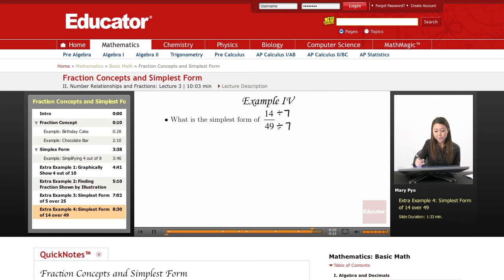So 14 divided by 7 is 2, and then 49 divided by 7 is 7.